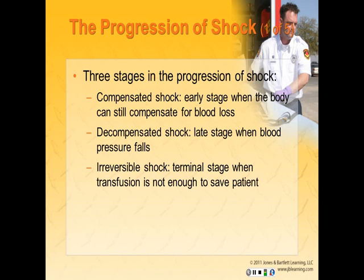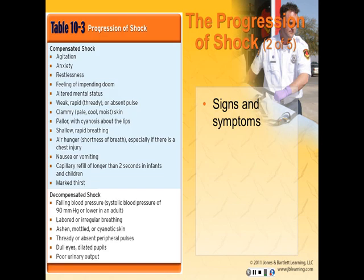Now we're going to talk about how shock progresses. There are three stages in this progression. The first is compensated shock, which happens early when the body can still compensate for blood loss. Decompensated shock is the next stage, a later stage when blood pressure starts to fall. And irreversible shock is the terminal stage when transfusion is not enough to save the patient's life.